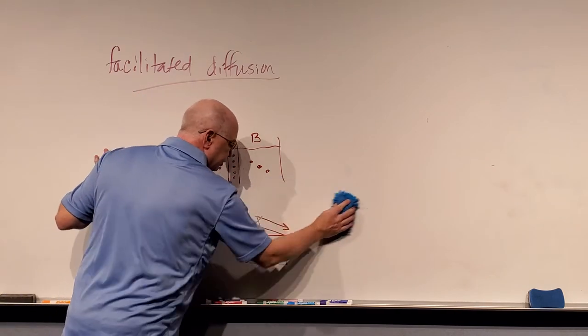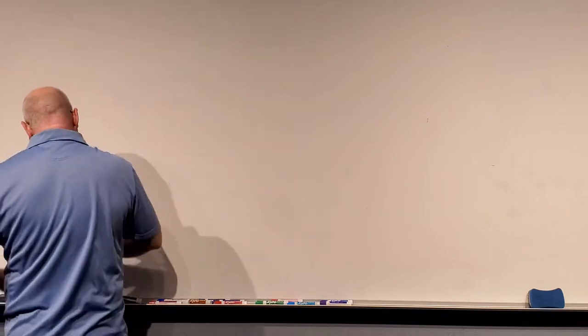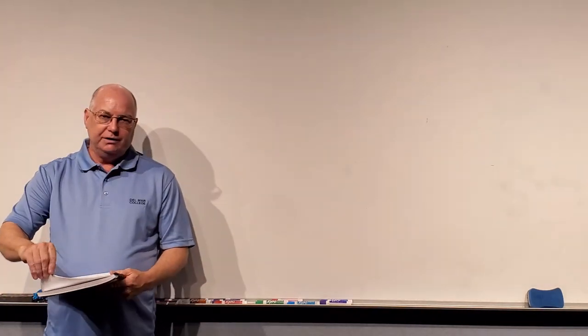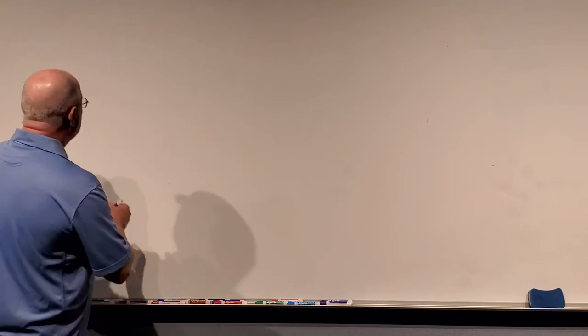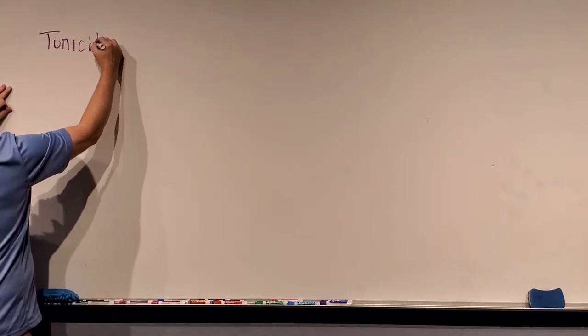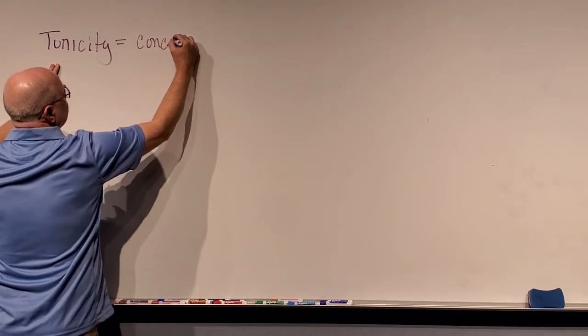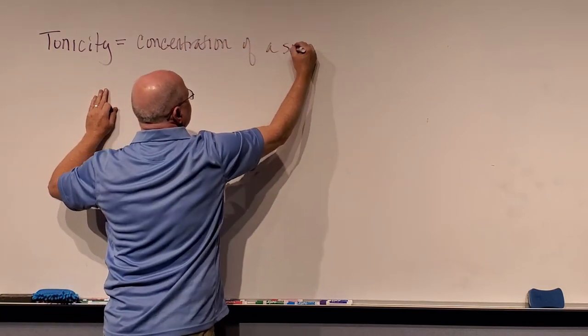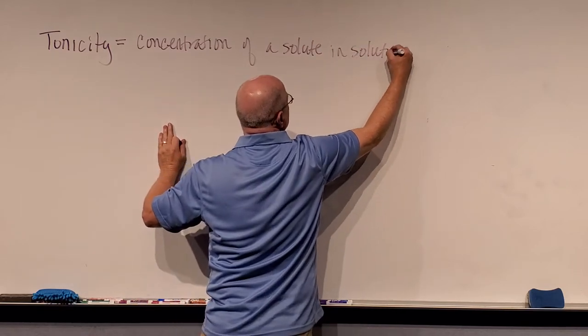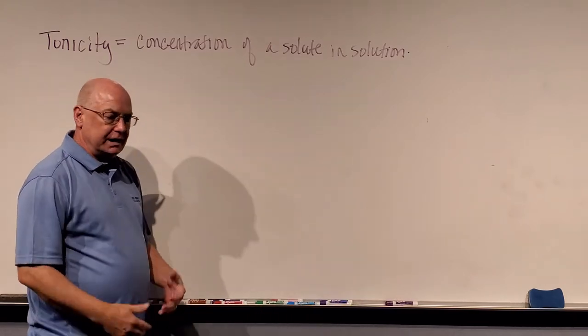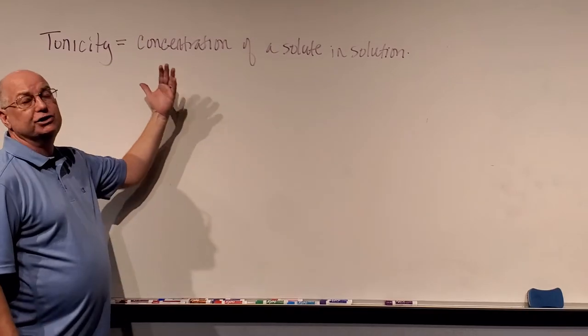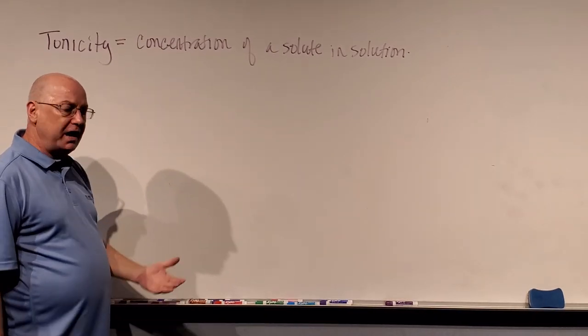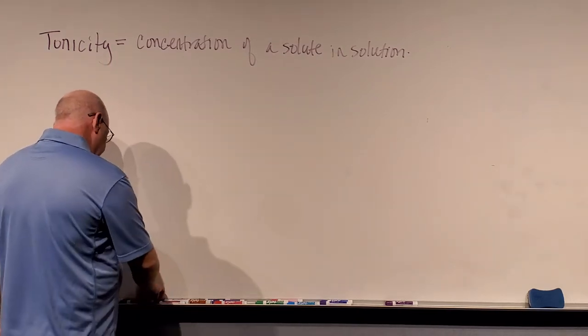Now let me make sure I don't skip anything from the note set. We're talking about osmosis on page 17. Before moving on, I need to talk about tonicity and explain why it's important. Tonicity simply means the concentration of a solute in solution. So if I have 10% sodium chloride, the tonicity of that solution is 10% sodium chloride. If it's 25% potassium permanganate, that's the tonicity of that solution.